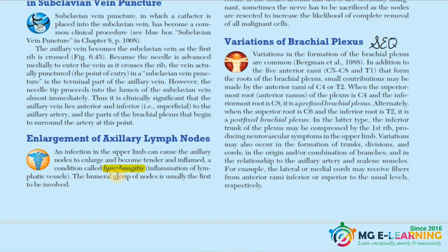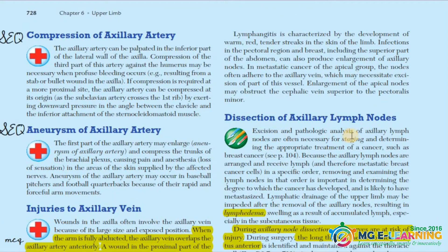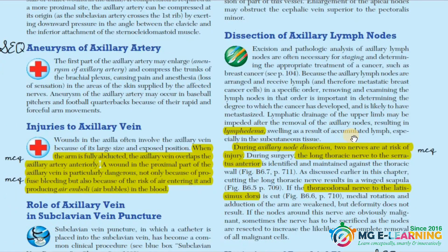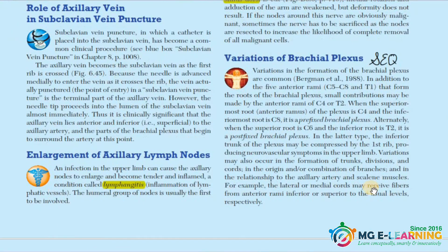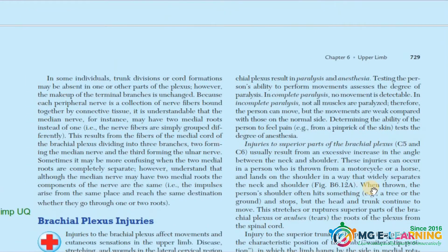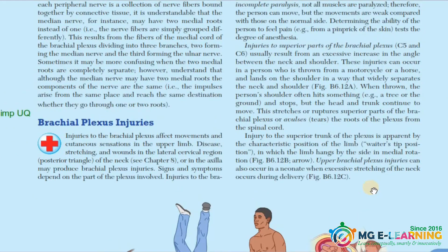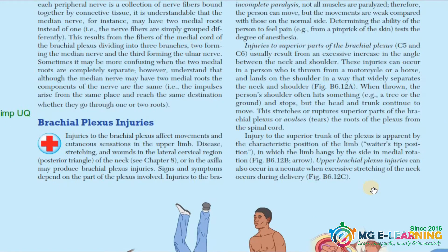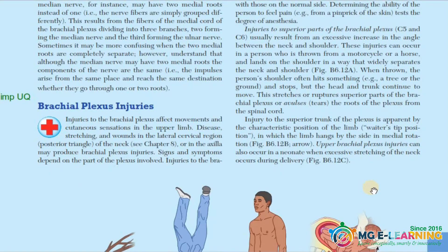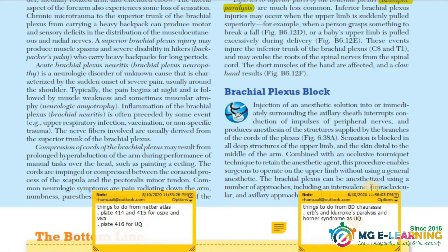Enlargement of axillary lymph nodes — just read it. After that, variations of the brachial plexus — this is an SCQ, look at it. Then brachial plexus injuries — this is a university question and is very important; it is asked many times. Everything related to the brachial plexus is important and must be memorized. Also note the brachial plexus block coming up.